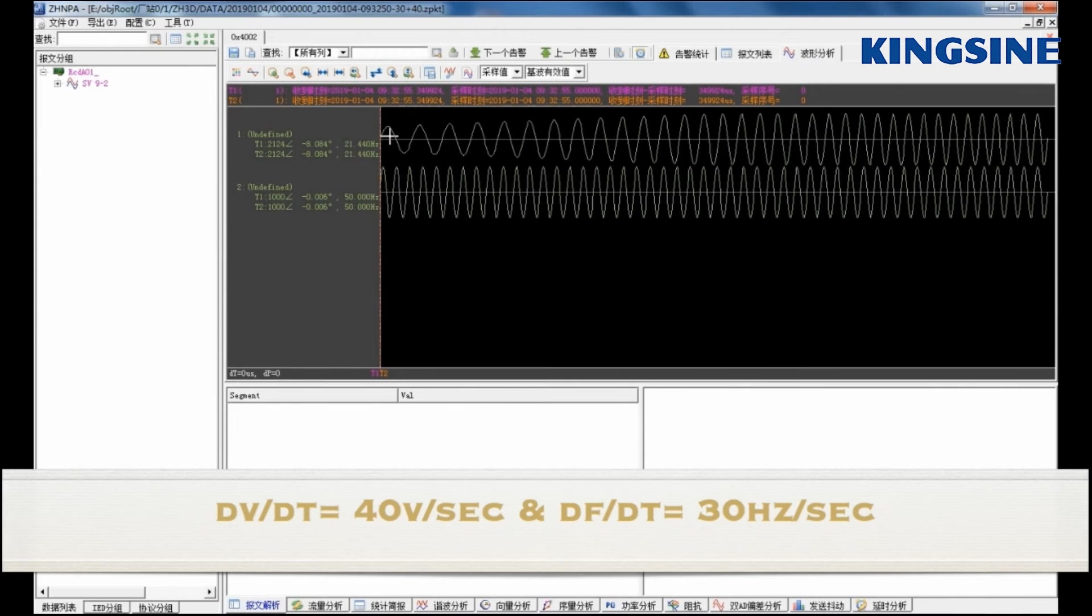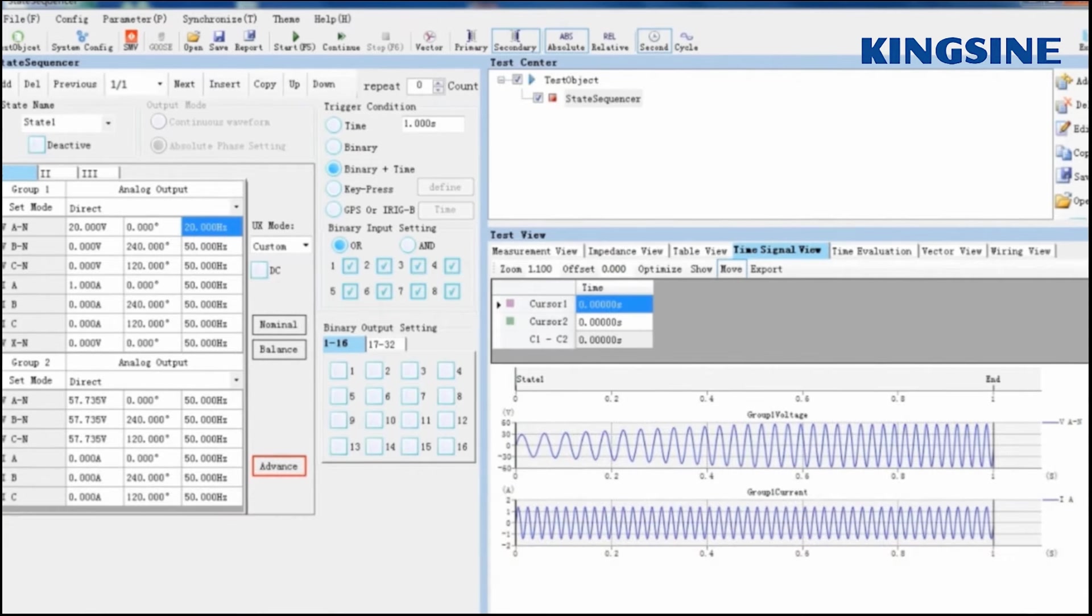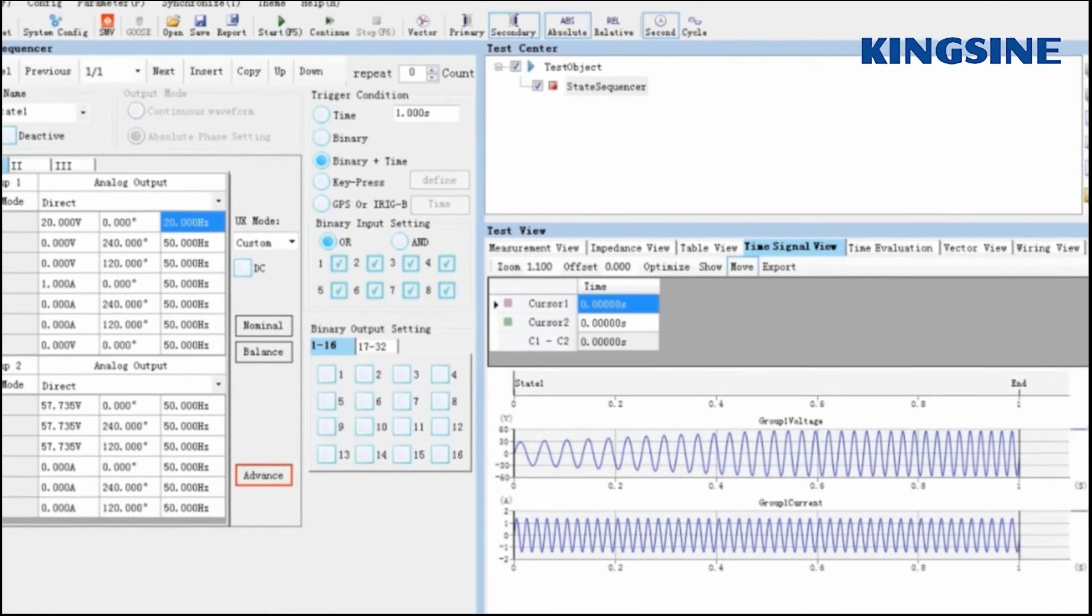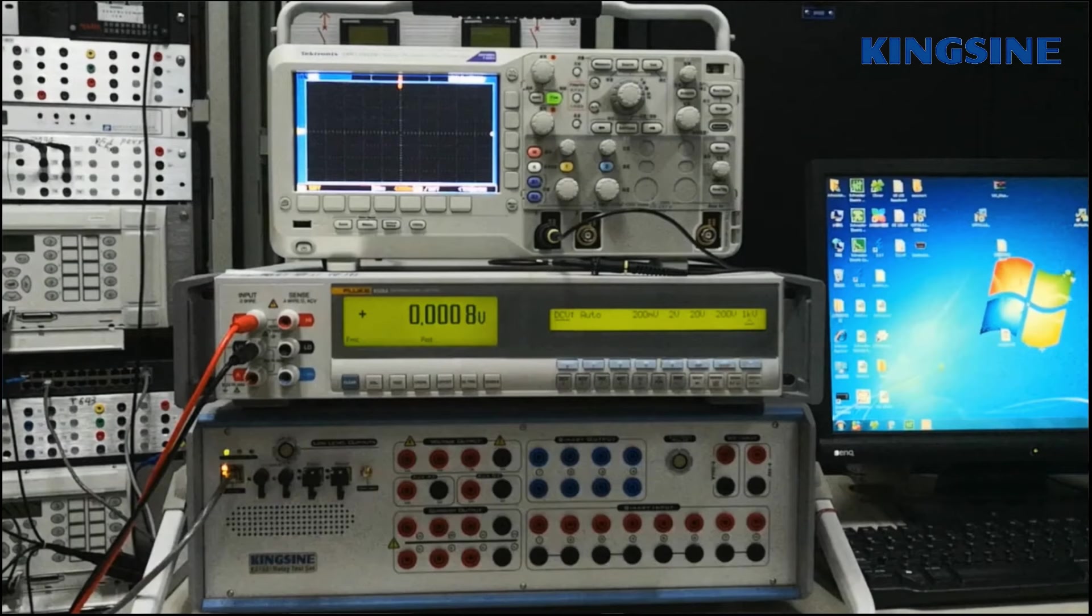We can observe in sampling value waveform that both the magnitude and frequency of voltage signal are increasing linearly with time. Also, the waveform is similar in KRT software time signal view.